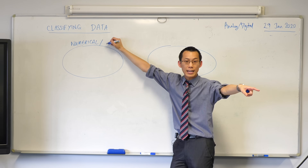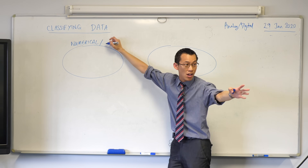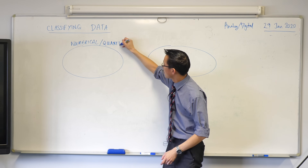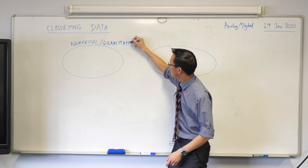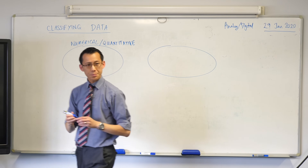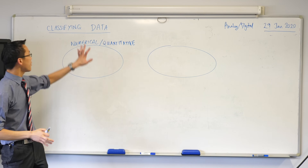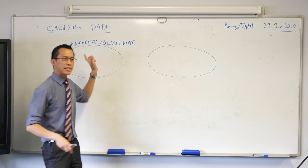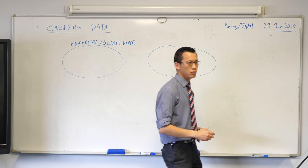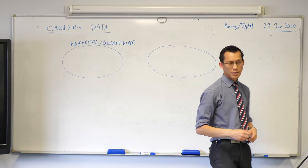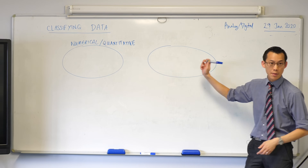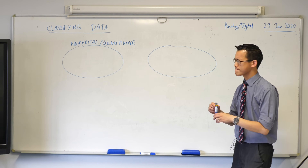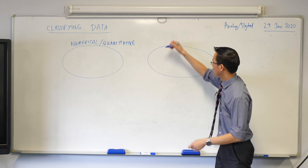Now, there's some data which has nothing to do with numbers - it's non-numerical. Does anyone remember what it's called? Qualitative. Categorical - very good. So qualitative or categorical data is our second big section.